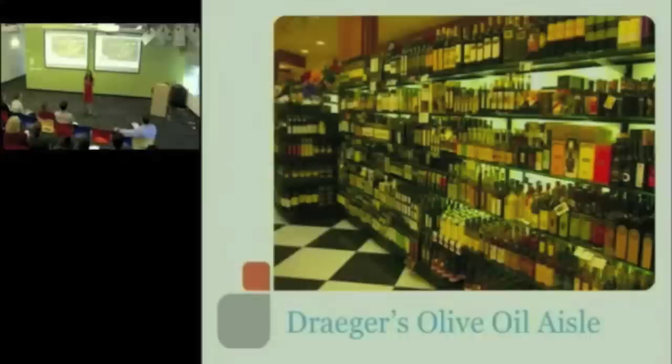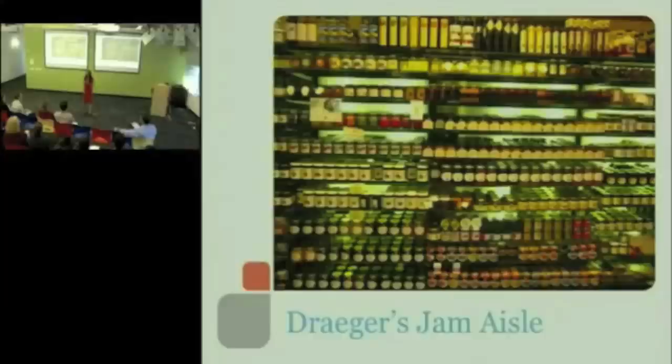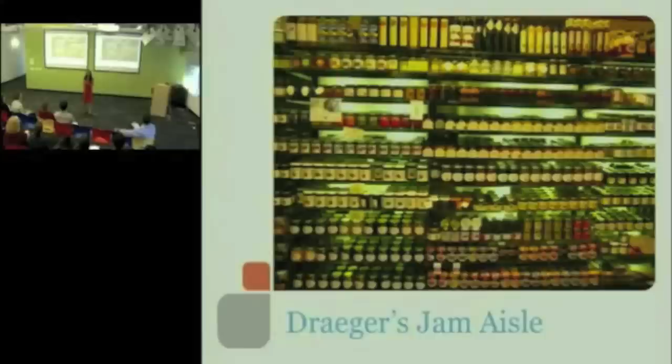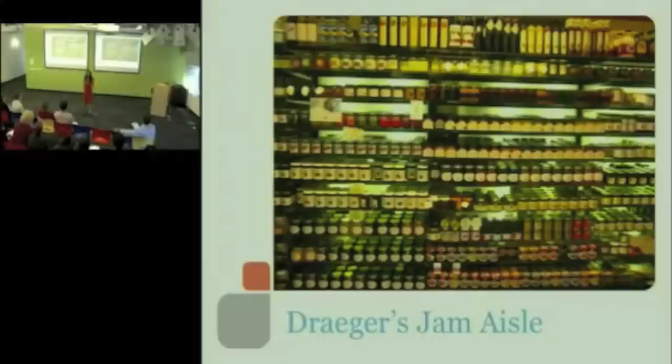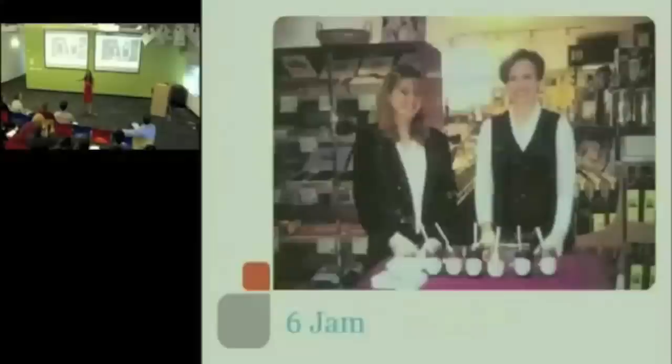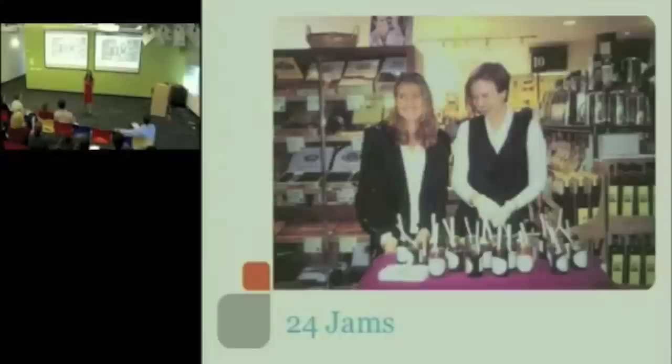We decided to do a little experiment. We chose Wilkin & Sons. Here's the jam aisle. They had 348 different kinds of jam. We chose Wilkin & Sons, the Queen of England's brand, to do our little experiment with. So we set up a tasting booth right near the entrance of the store. We either put out six different flavors of jam, or 24 different flavors of jam. And now we measured two things. First, in which case were people entering the store, passing by, more likely to stop and sample some jam?